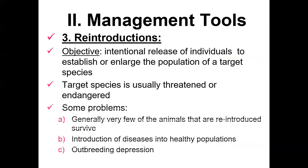Lastly, reintroductions involve the intentional release of individuals to establish or enlarge the population of a target species — in my case, hellbenders. The target species is usually one that's threatened, of special concern, or unfortunately endangered. When thinking about reintroductions, there are three critical considerations: if you release too few individuals, you may have survivorship issues; you have to be very aware of the potential introduction of diseases into healthy populations — in Indiana and most states, we screen individuals both in the wild and in captivity to confirm disease presence or absence; and you have to worry about outbreeding depression, ensuring source populations are not too genetically dissimilar from the populations where you're trying to establish them.